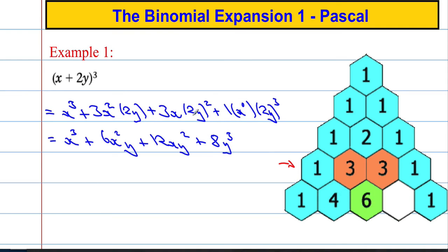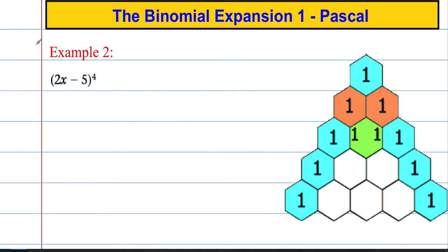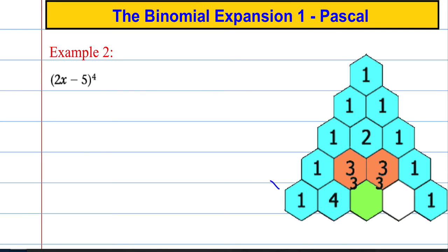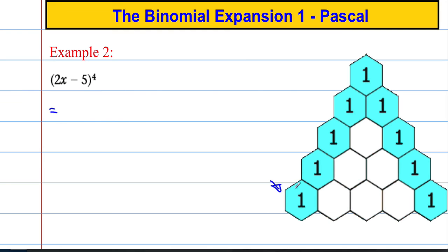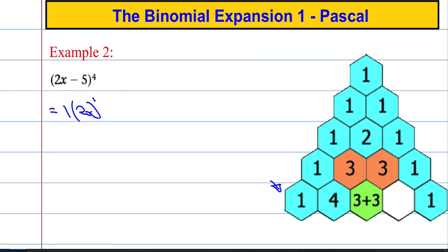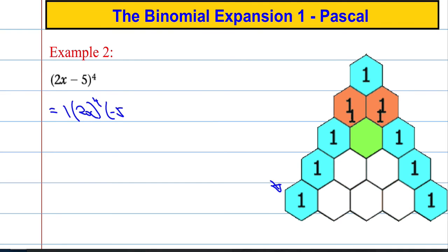Let's take a look at another example. It's the power of four, that means it's the fifth row down — one, two, three, four, five. So it's this row here that we're going to use. One times this raised to the highest power times this to the power of zero. So I'm going to write this out so we can see exactly what's going on.